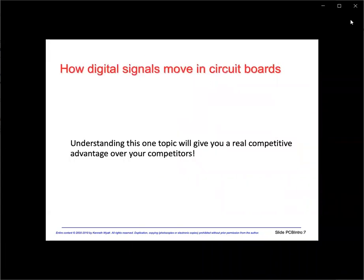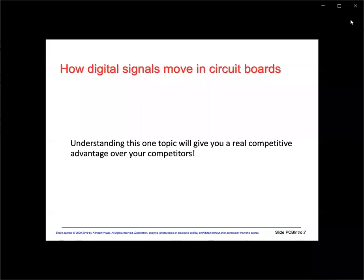Let's discuss how signals move in circuit boards — this will likely be your most important takeaway during this presentation. Most designers have been misled in circuits class: it was implied that current was electrons flowing through copper wires from source to load. For DC circuits this is accurate, however the movement of electrons does not occur at near light speed — they are too tightly bound to copper molecules and only move at about one centimeter per second. For AC circuits, the standard circuit theory model must treat lines as transmission lines. Understanding how digital signals propagate in PC boards will give you a competitive advantage.